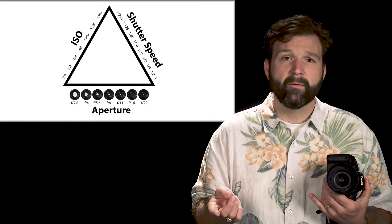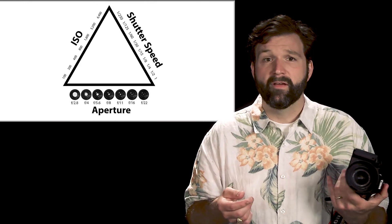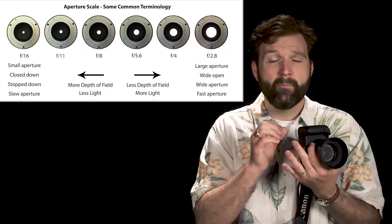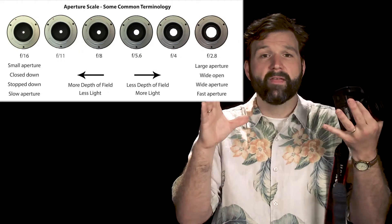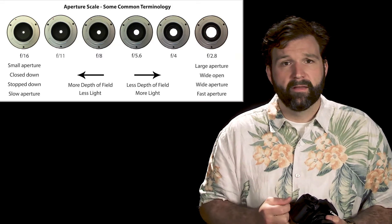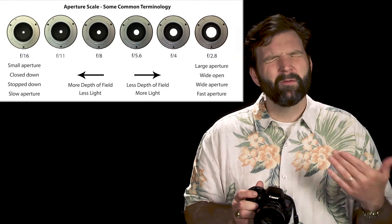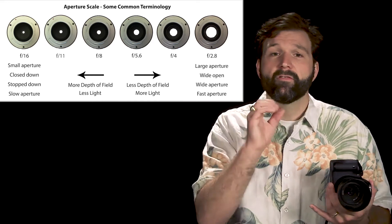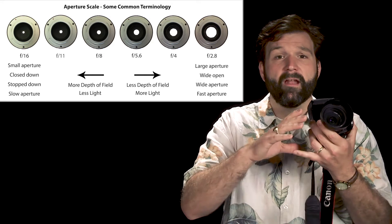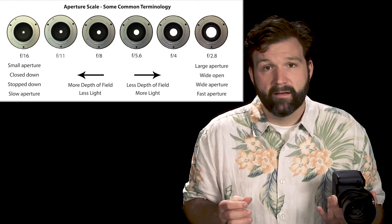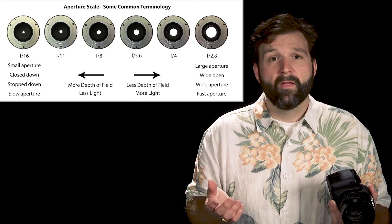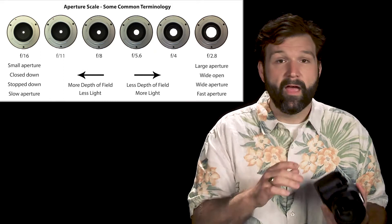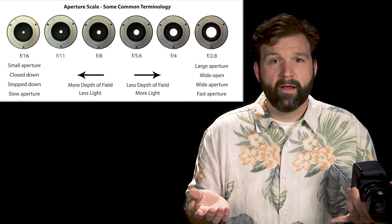Let's talk about the second concept: f-stop, which is nothing more than how big the aperture blades of the camera are going to open up and let light in. It can be confusing, but let's make it simple: if I have a big number, I have a small hole; if I have a small number, I have a big hole letting a lot of light in. For example, f-22 is a small hole, f-2 is a big hole. Now, that hole is not only letting light in, but also controlling the depth of field.